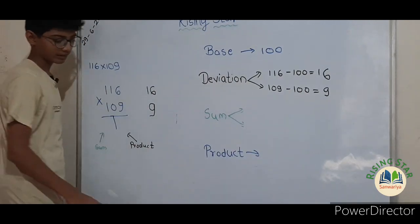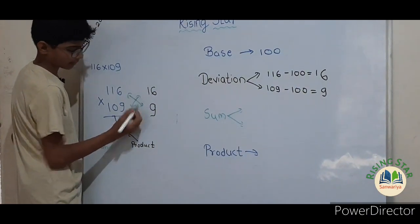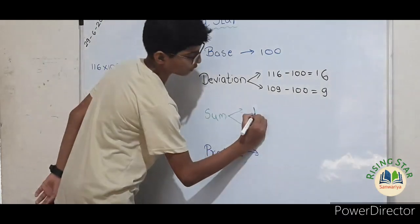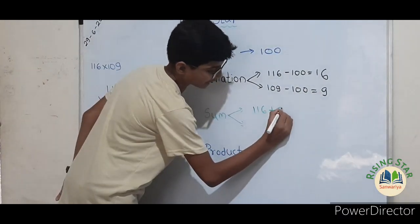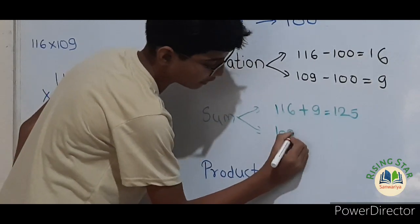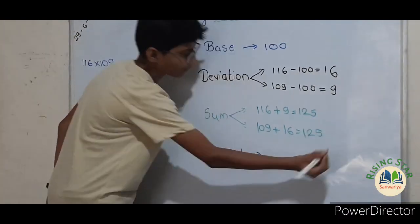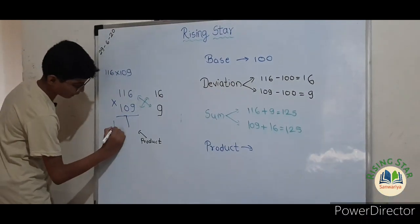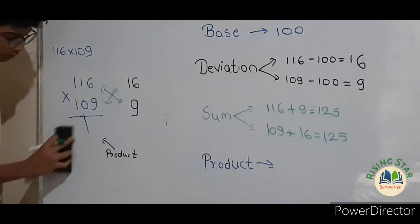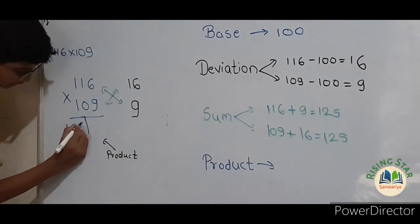Now let us find the sum. You can add either pair — the answer will be the same. One hundred and sixteen plus nine equals one hundred and twenty-five, or one hundred and nine plus sixteen also equals one hundred and twenty-five. So just write one hundred and twenty-five here.